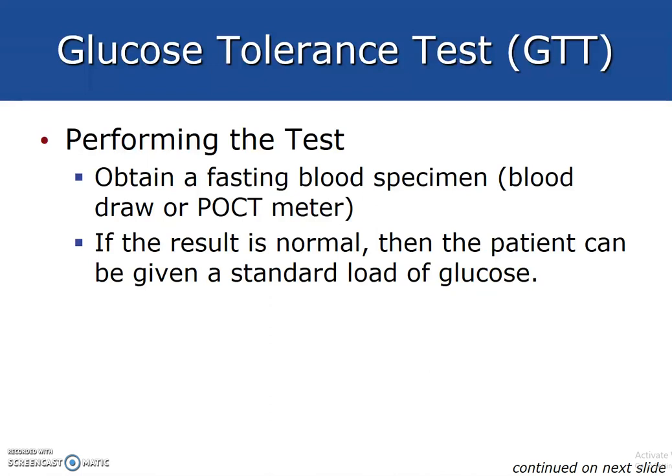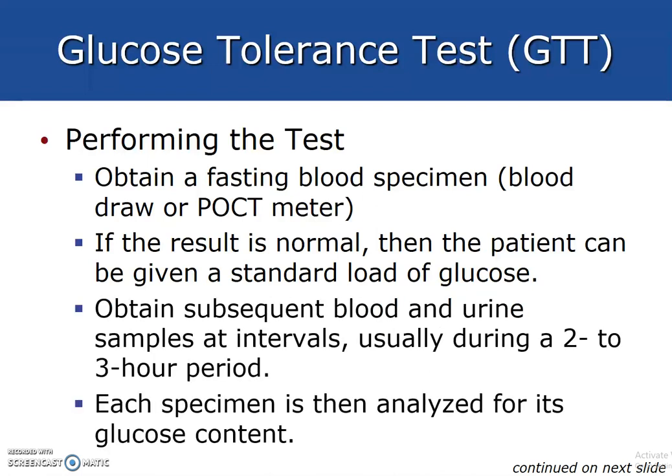When performing the GTT, depending upon the facility, they might obtain a fasting blood specimen from a point-of-care meter. If the result is normal, the patient may be given a glucose load. However, if the result is abnormal, we would discontinue the procedure. We obtain blood and urine samples at intervals. Depending upon the test, GTT can be ordered as a one-hour, two-hour, or three-hour test, and each specimen is then analyzed for glucose content.